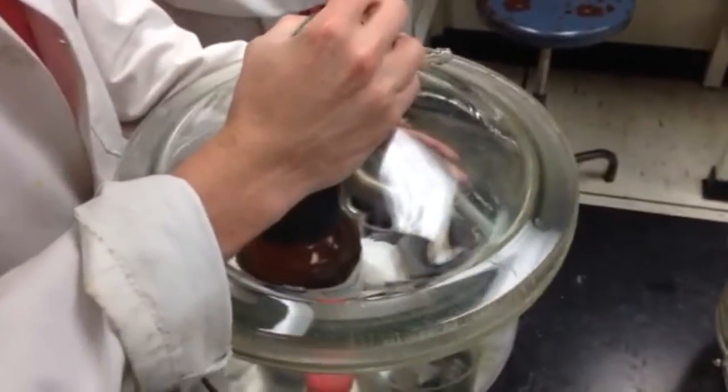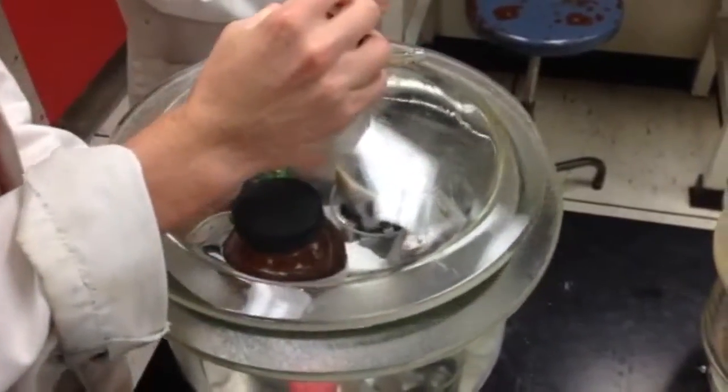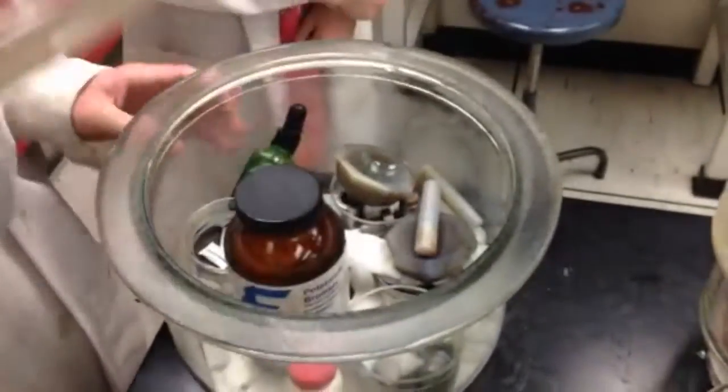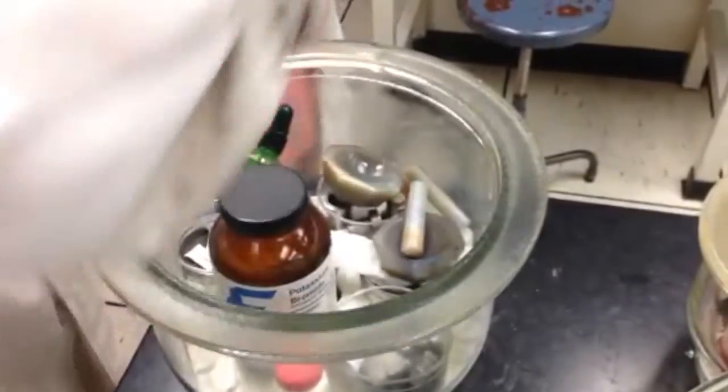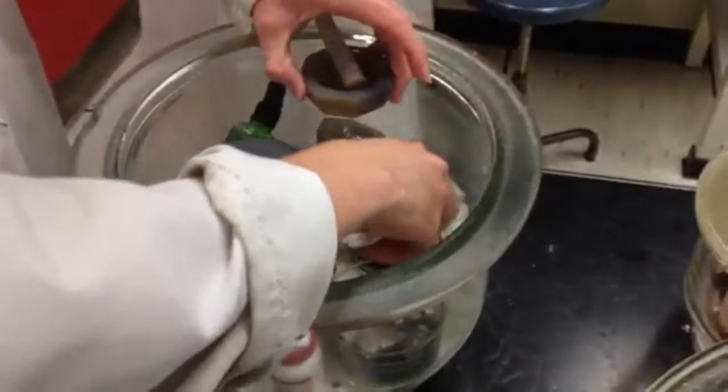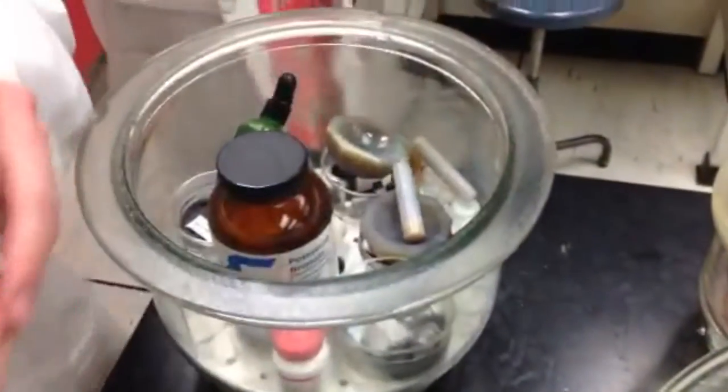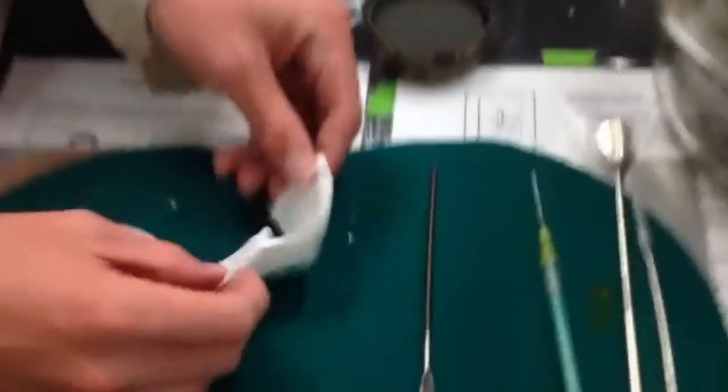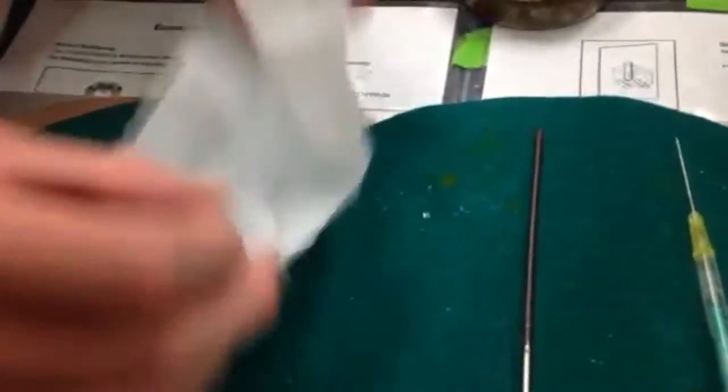To begin, you need to go over to the desiccator and carefully slide the top off. Inside the desiccator, you'll need to grab the salt disks which should be wrapped in some white tissue paper. Take those out and put them down on the felt. Carefully unwrap each one individually.